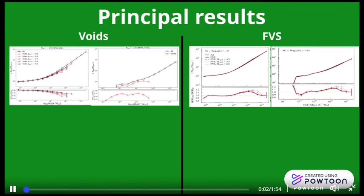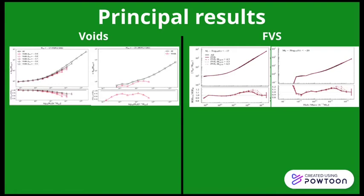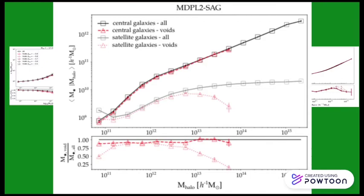Voids. We also studied the stellar content of the galaxies in these structures, mainly the stellar mass of the central and satellite galaxies. In voids, we found that the mean stellar mass of the central galaxies are, in general, 10% lower than the average. For the satellites, the results are the same in halos with mass lower than 10^13. At this point, the mass of the satellites falls considerably.